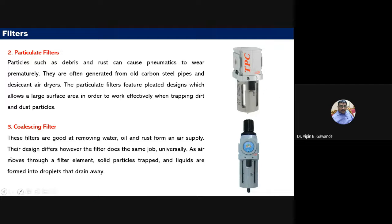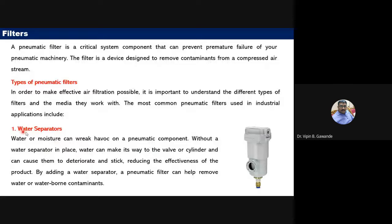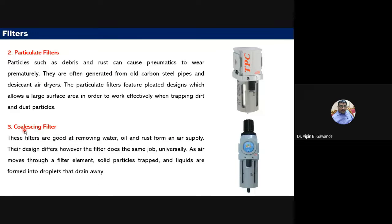The third type is the pneumatic coalescing filter. These filters remove water, oil, and rust from the air supply. As air moves through the filter element, solid particles are trapped and liquids form into droplets that drain away. The coalescing filter combines the functions of both a water separator and a particulate filter.